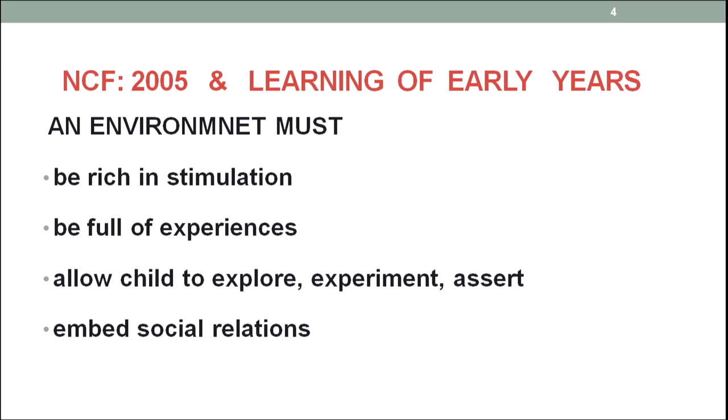What kind of environment must be there to get these objectives? Environment must be rich in stimulation — it should not be dull, at least it should be interesting, and then it should be challenging. If it is interesting, it caters to the needs of average or below-average children with respect to intelligence, but if it is challenging, it is for a child who is above-average intelligent. So, environment must cater to the needs of all and not be skewed to one kind, because if it caters to one kind, the other category may feel bored.